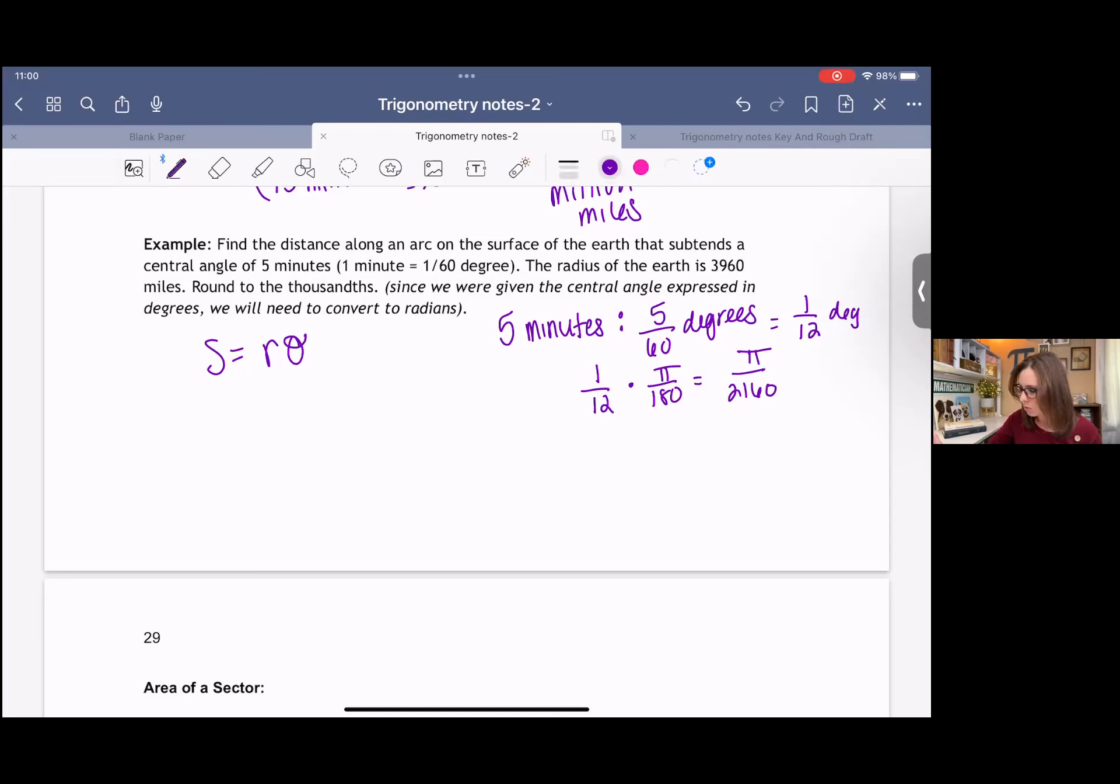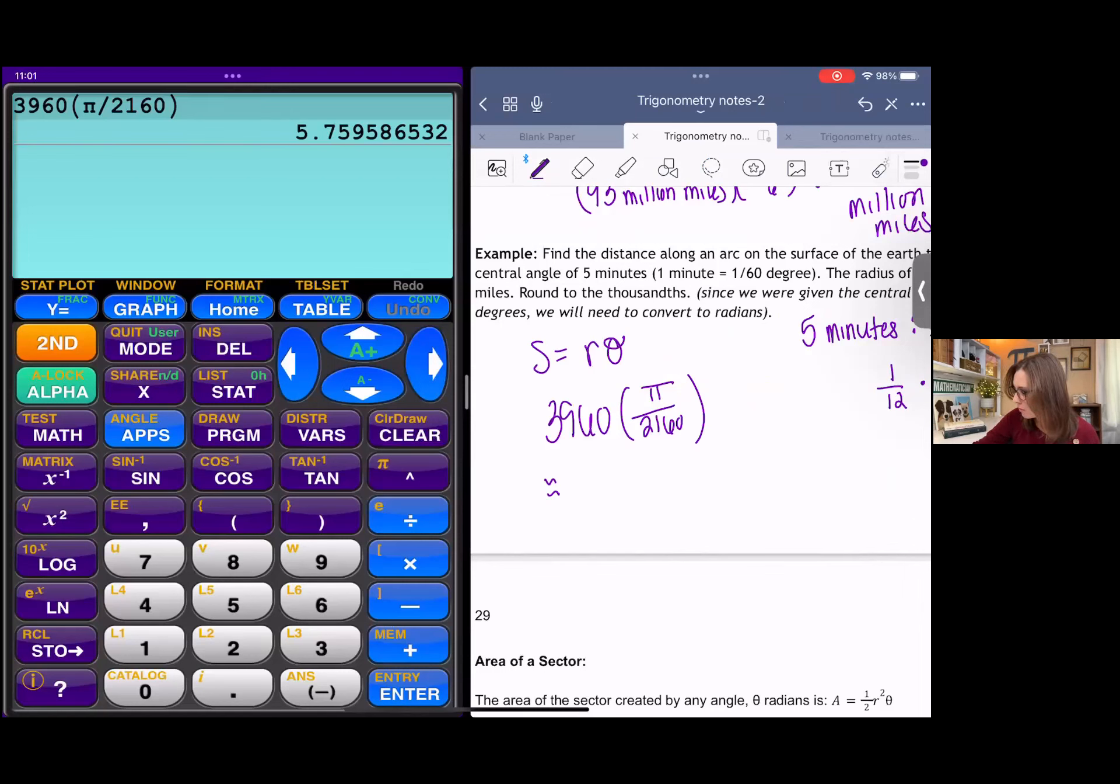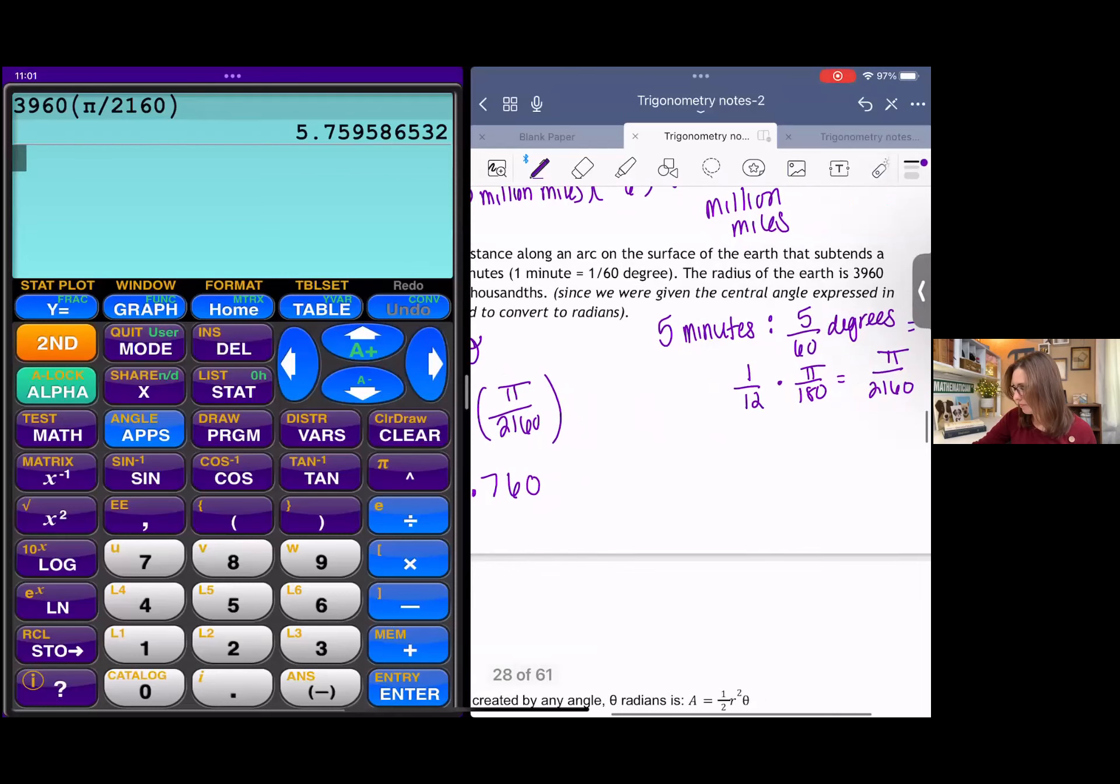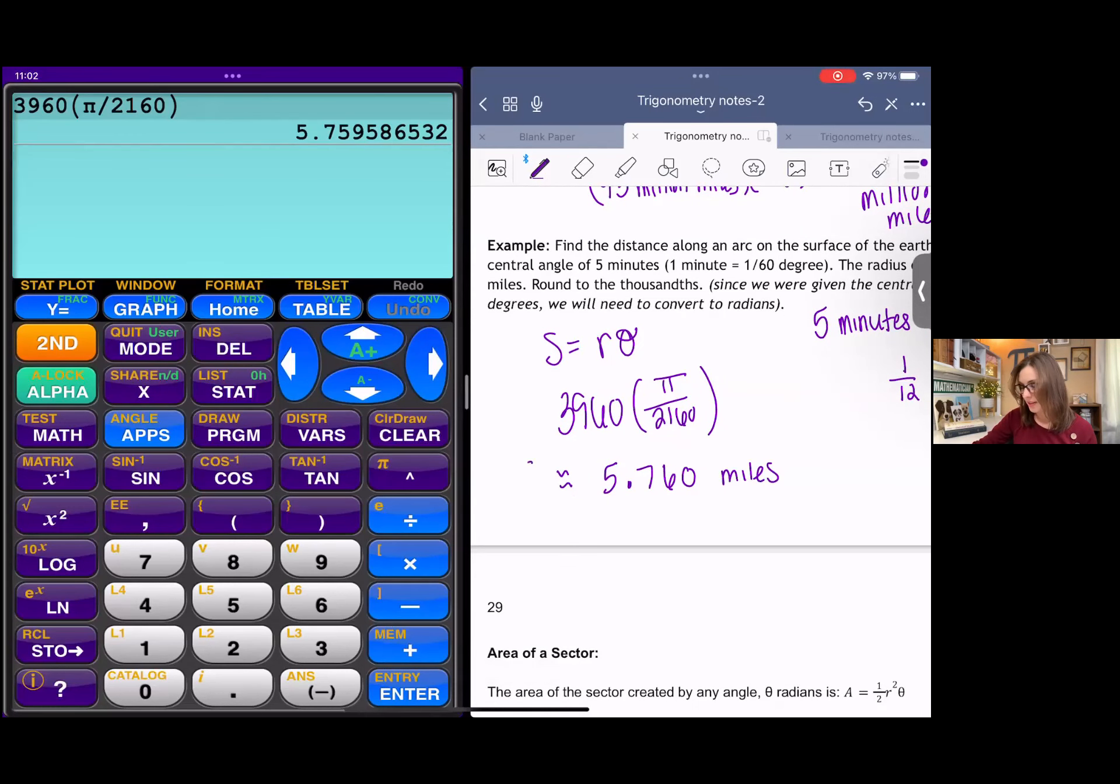We're going to take the radius and multiply by our radians. And then get an estimation to the thousandths place. And we get about 5.760 miles. And that's it.